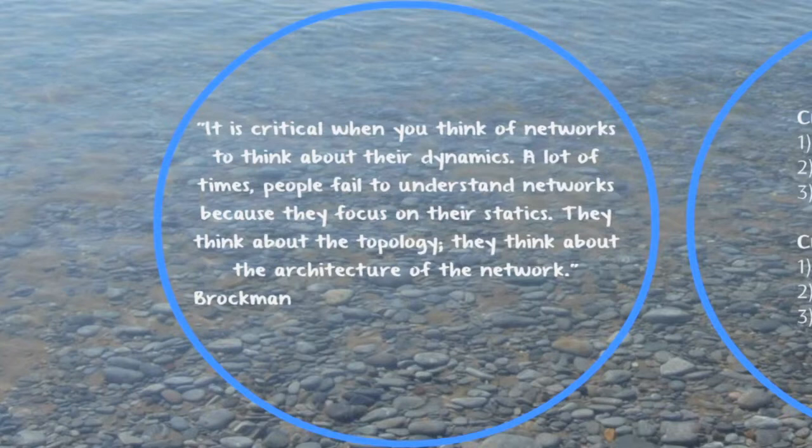So Brockman — John Brockman — said this well. He said that it is critical when you think of networks to think about their dynamics. A lot of times people fail to understand networks because they focus on their statics. They think about the typology, they think about the architecture of the network. The reason I mention this is because things change. Culture and mission moves about — it's dynamic and not static. And the map that we've looked at gives us a chance to really understand that and start to plot, plan, assess and evaluate what we can be doing in order to create culture.